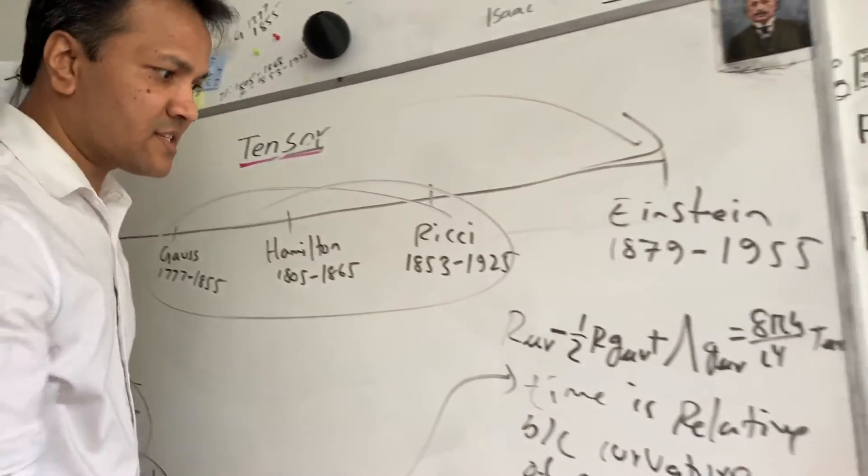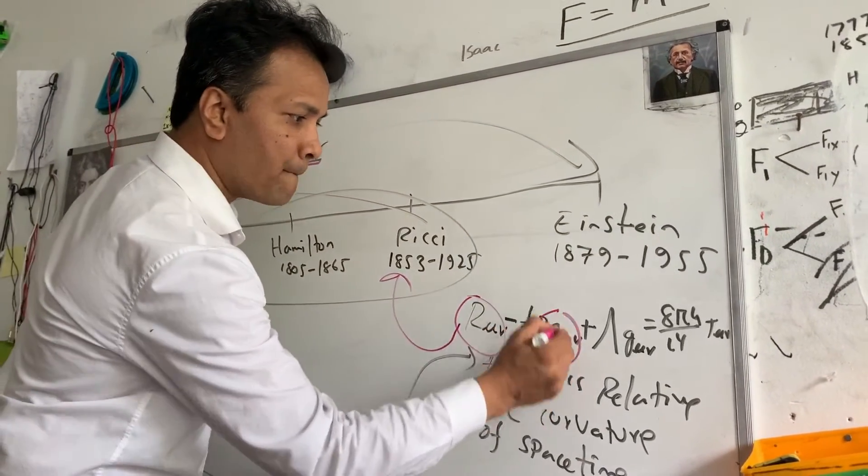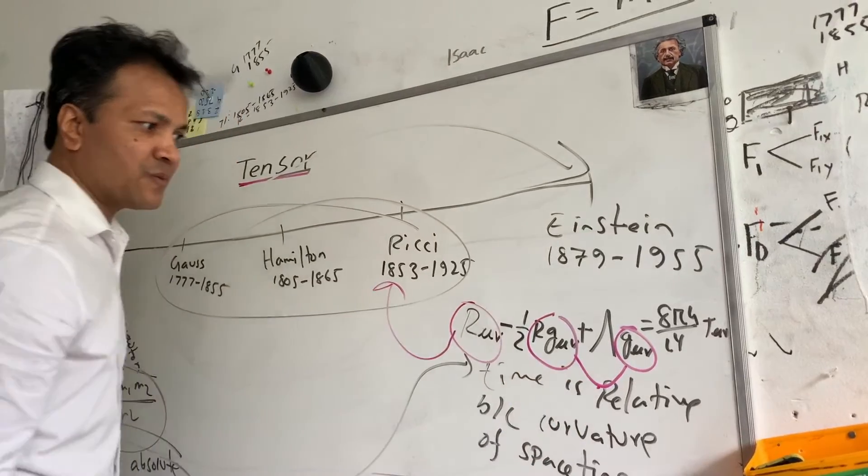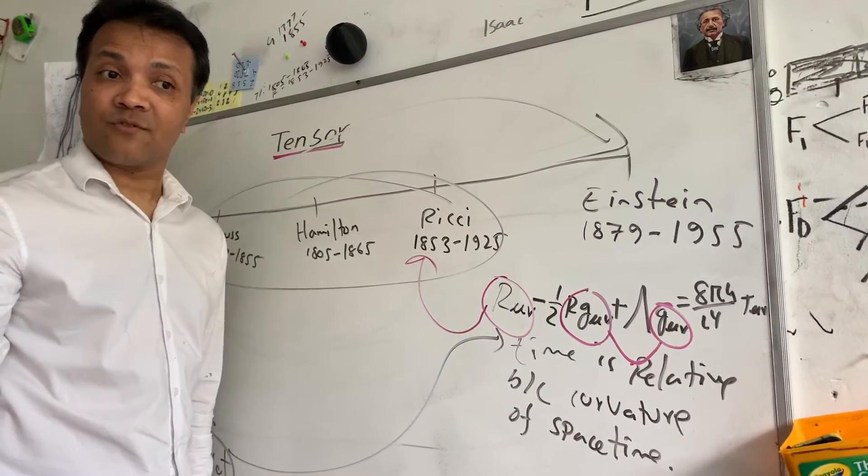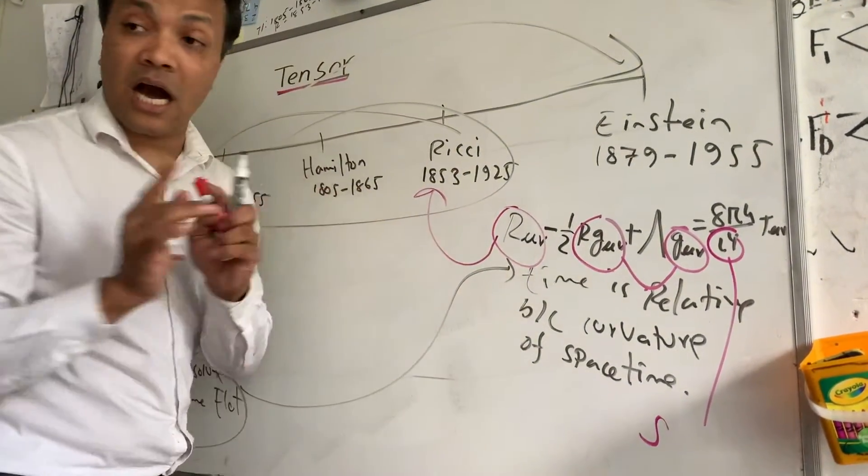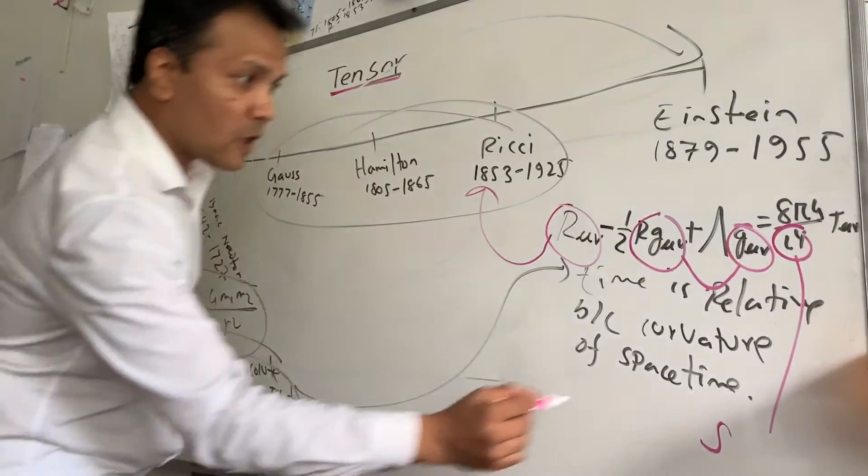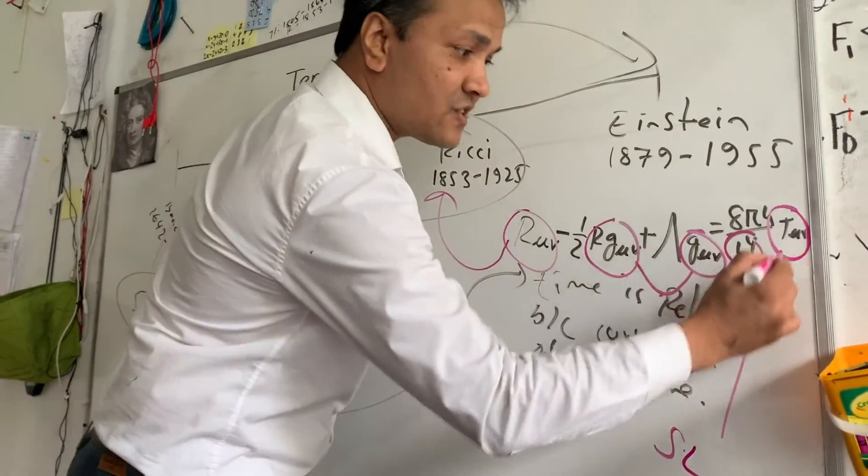Now, if you look at this equation, this is Ritchie tensor. This is metric tensor. This is metric tensor. And this is metric tensor. I'm going to talk about the metric tensor in a second. This is speed of light. And Einstein said only one thing constant. Time is not constant. Only speed of light is constant. So this is the speed of light. This is energy tensor.